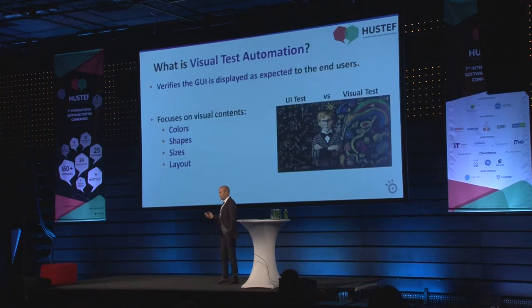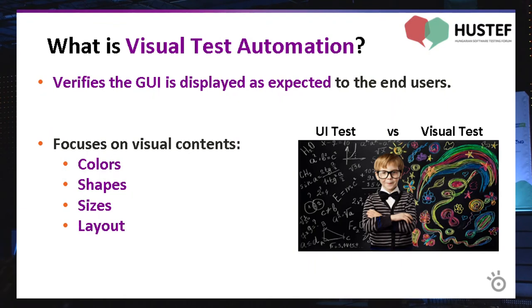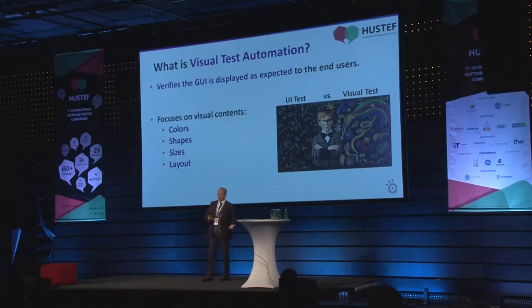What is visual test automation? It's a test automation activity which verifies the graphical user interface is displayed as expected to the end user. When we do UI test automation using, for example, Selenium or Capybara or another tool, we are interacting with web elements, manipulating them, and adding assertion points to check functionality. We are focusing on functionality. But in visual testing, we are focusing on the visuals, such as colors, shapes, location of elements, and so on.